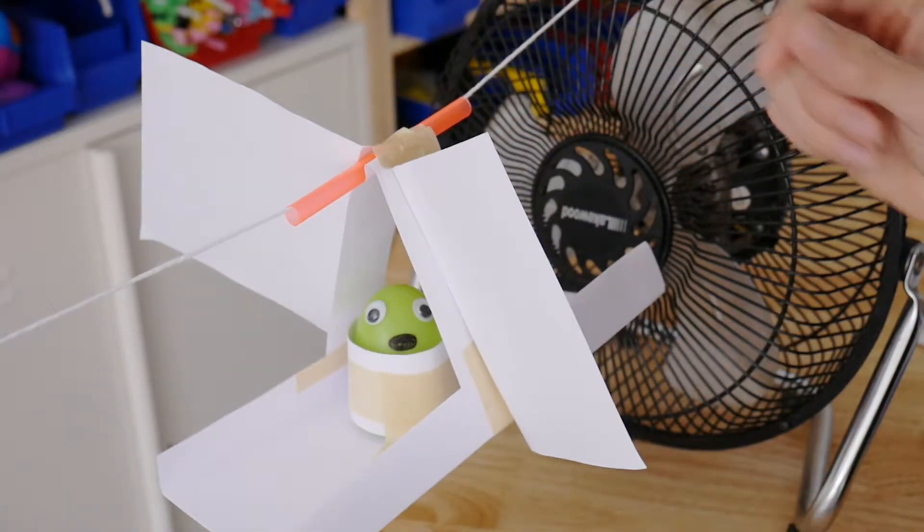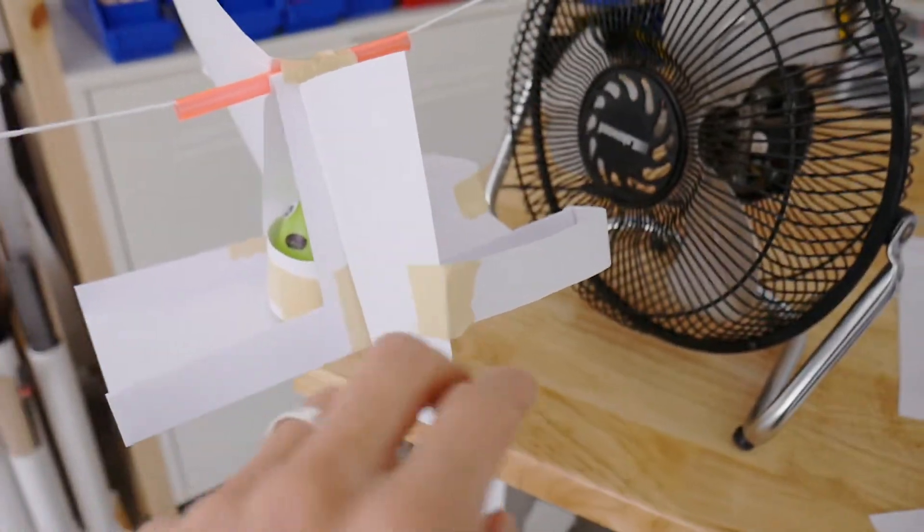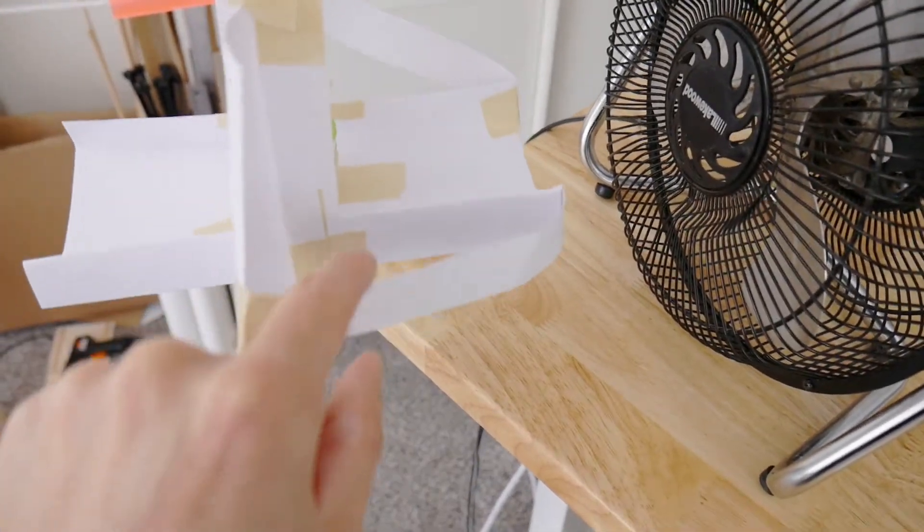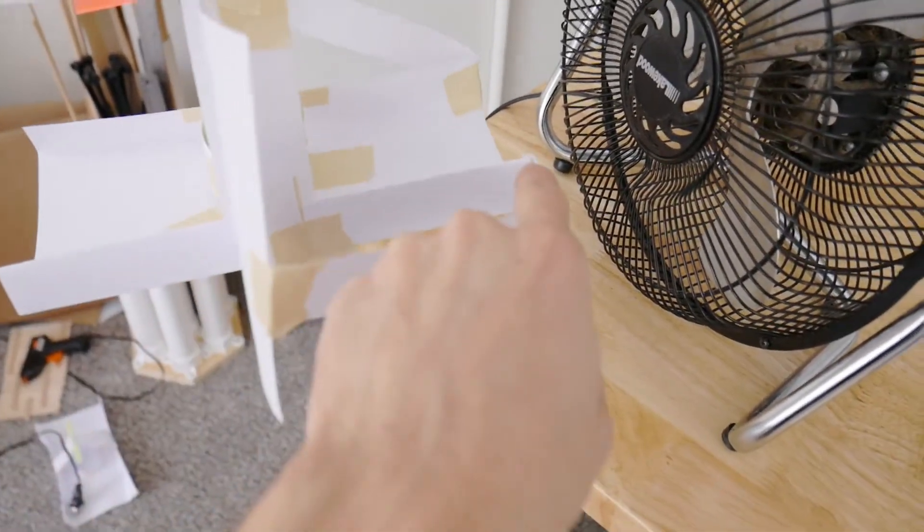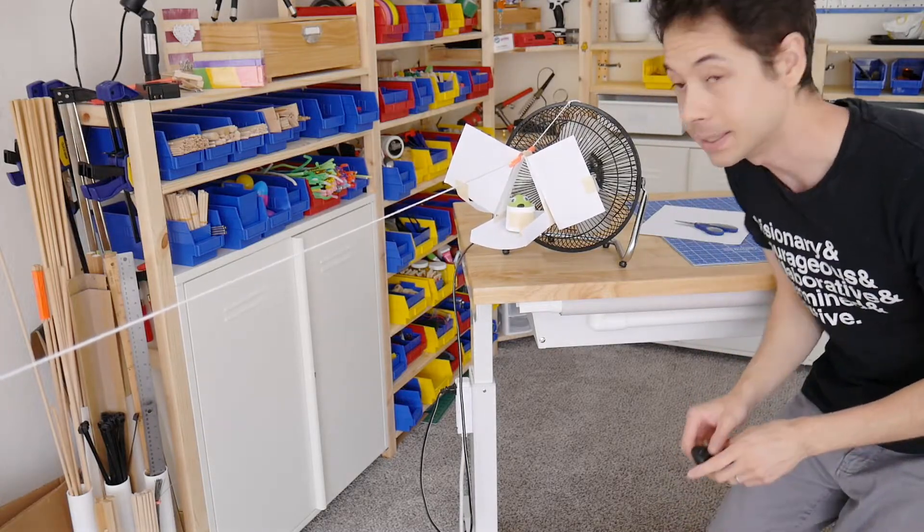Okay now our carrier has two sails and to stop these sails from flopping forward I taped on these strips of paper here that connect the sail to the carrier base. Okay I think we're ready for another test. Let's see what happens this time.